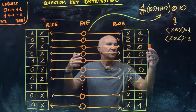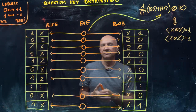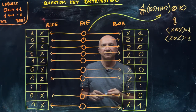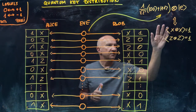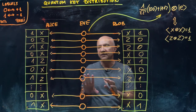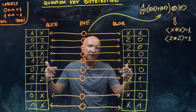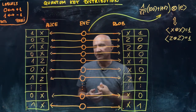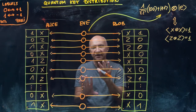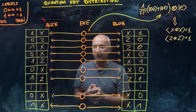Alice and Bob will choose a random subset of pairs and run a public test for this correlation, and they will use another subset of qubits to generate the secret key. So the testing part and the key generation will be separated, as you will see in a moment.